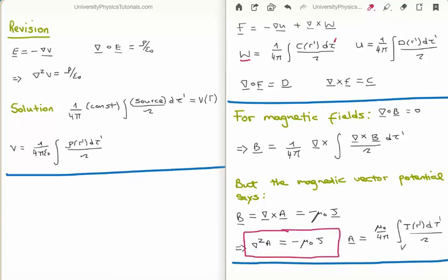We need to relate the functions w and u to our vector field F. Inside w and u we have fields c and d, where d is the divergence of the vector field F and c is the curl of the vector field F.